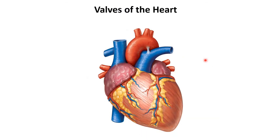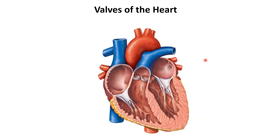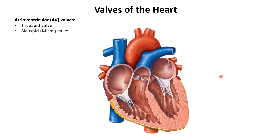We've got a nice coronal section of the heart and we can see all four valves very clearly from the picture. The two atrioventricular valves we're going to be talking about are the tricuspid and bicuspid valves. The tricuspid valve is the one on the right and the one on the left is the bicuspid or mitral valve.